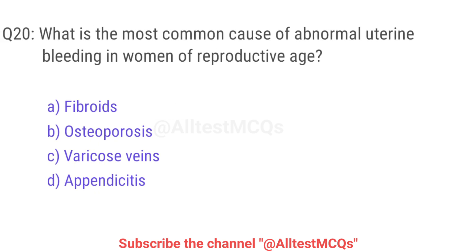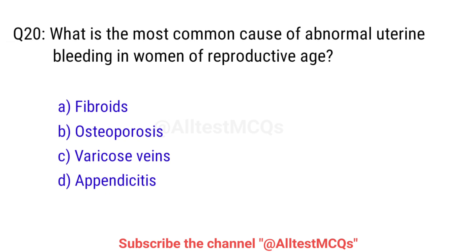Q20. What is the most common cause of abnormal uterine bleeding in women of reproductive age? The right answer is Option A: Fibroids.